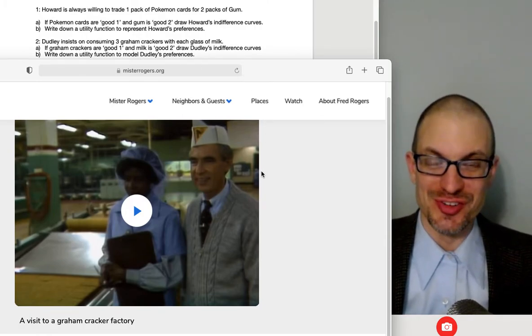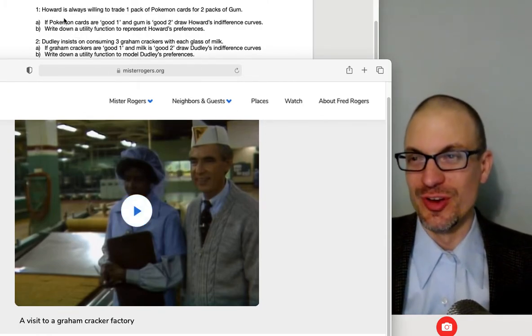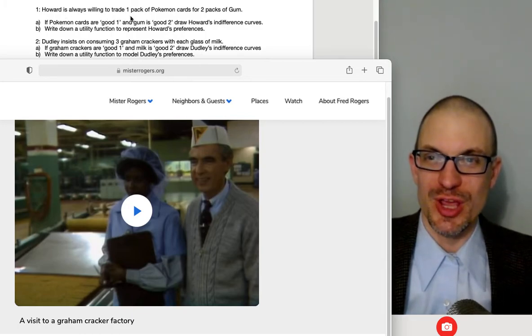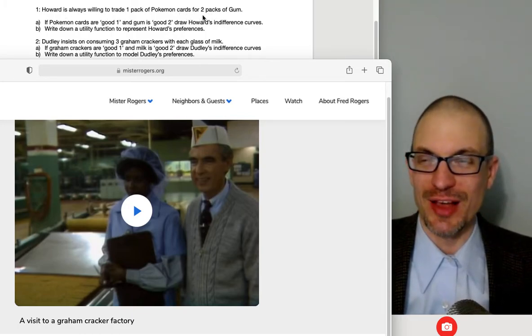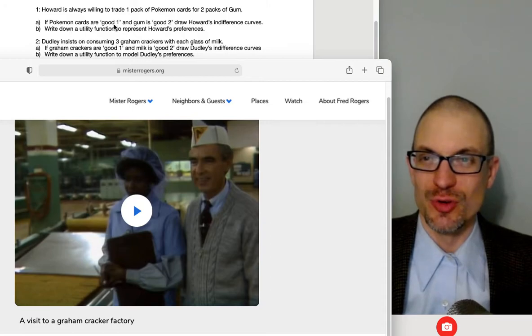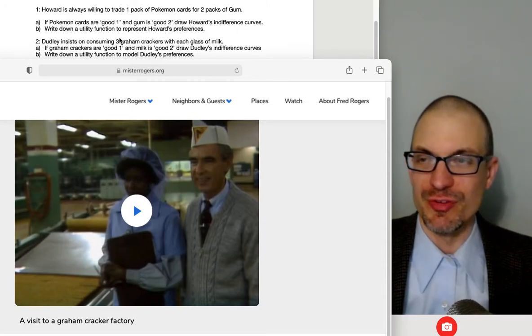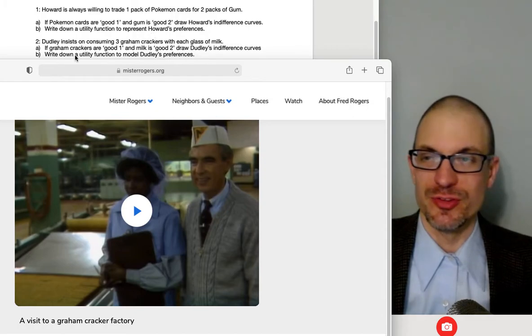Now you know what Mr. Rogers is doing here, right? Anyway, so Howard is always willing to trade one pack of Pokemon cards for two packs of gum. If Pokemon cards are good one, gum is good two, draw Howard's indifference curves. Write a utility function to represent Howard's preferences.